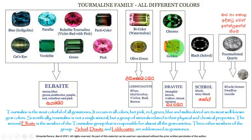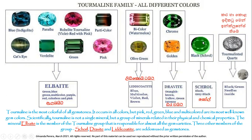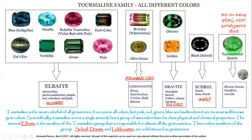Chrome, golden — and the Elbaite is called Elbaite. If you like light, you can use light. So this is the term of Tourmaline. This is called quartz, which is called quartz. This quartz is called tourmalinated quartz.